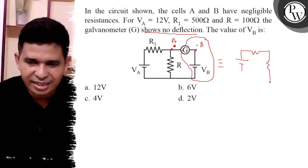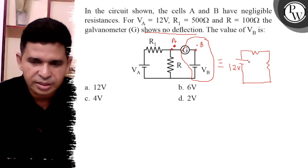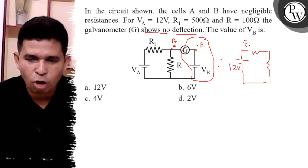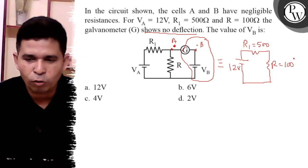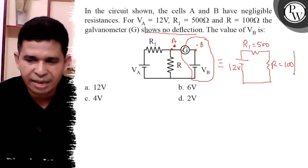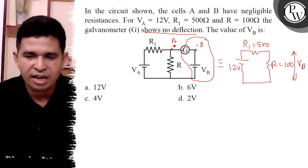The remaining simplified circuit has 12 volt applied, with R1 equal to 500 ohm and R equal to 100 ohm. The voltage VB is present at that point, and these two resistances are in series.